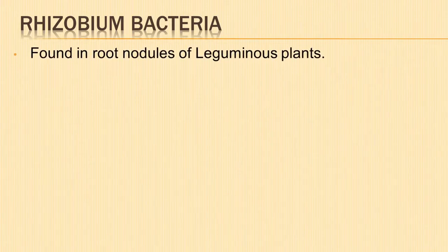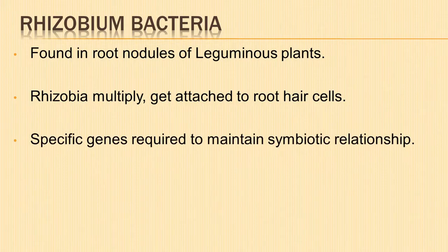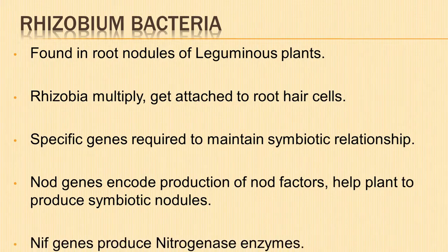We shall study in detail about nitrogen fixation by Rhizobium bacteria. Rhizobium bacteria are found in the roots of leguminous plants as small outgrowths known as nodules. Rhizobia multiply, surround the roots, and get attached to the epidermal and root hair cells. To maintain their symbiotic relationship with leguminous plants, the bacteria require specific genes — these include nod genes, which encode the production of nod factors that stimulate the plant to produce symbiotic nodules, and NIF genes, which produce the nitrogen-fixing nitrogenase enzyme.